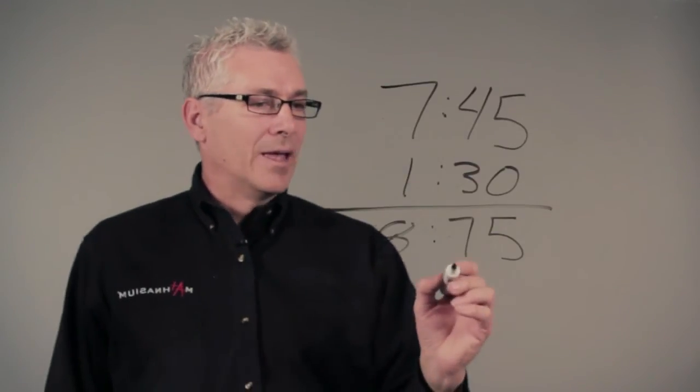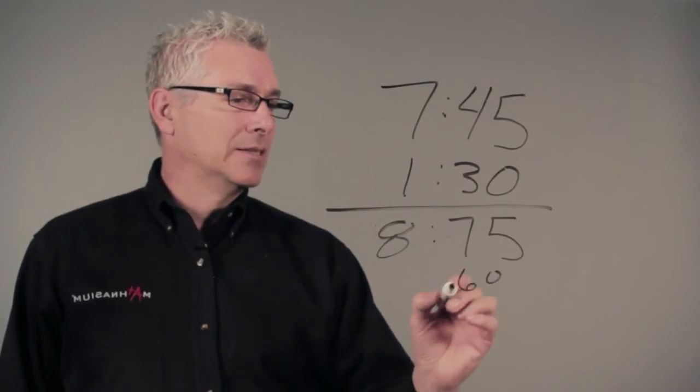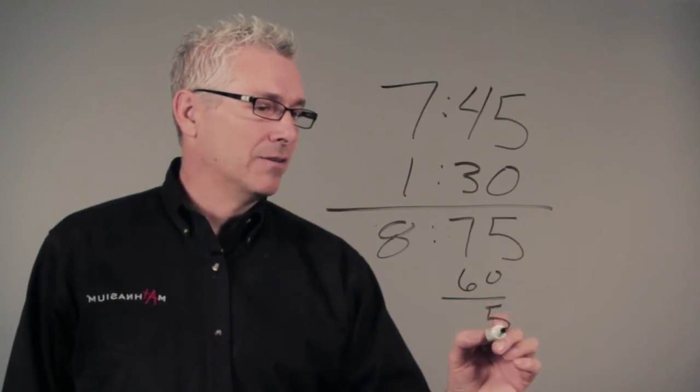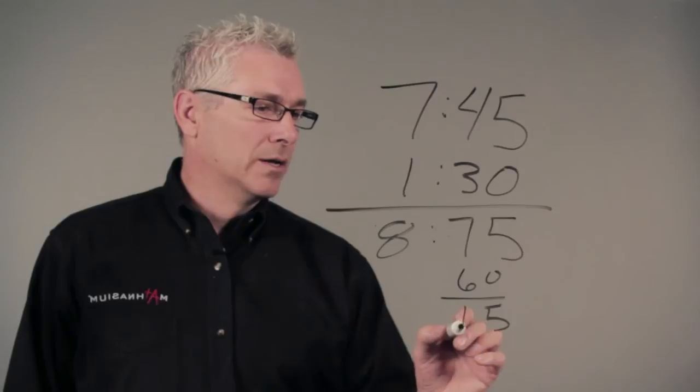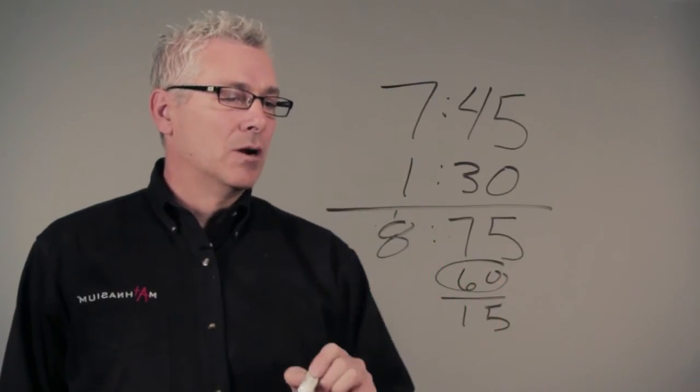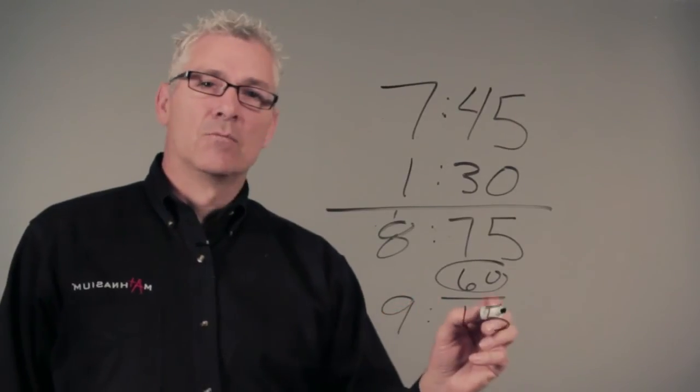So we have to take our 60 minutes from an hour. We subtract it from the 75, leaving us a 5 and a 1, and we take that 60 being one hour, we add it to our 8. That gives us 9:15 in the morning.